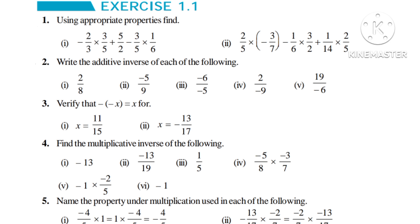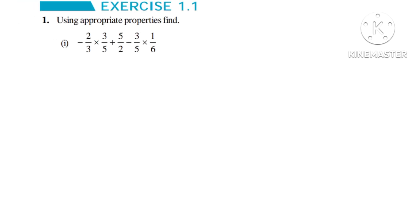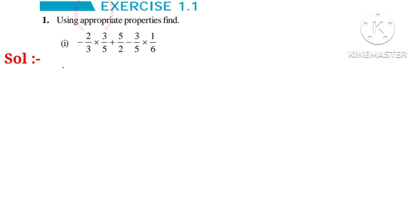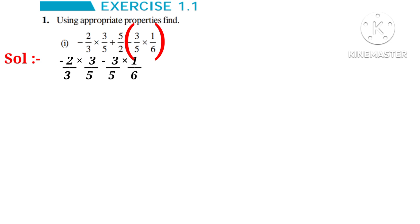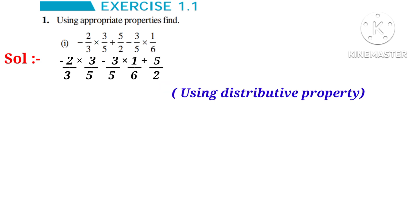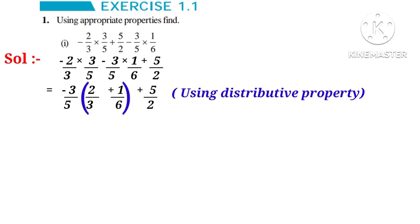Let us take the first problem: using appropriate properties, find the sum. Solution: observe that minus 3 by 5 is a common factor here. So let us write the first term in the first place, the last term in the second place, and the middle term in the last place. Now, using the distributive property, let us take minus 3 by 5 as a common factor. In brackets: 2 by 3 plus 1 by 6 plus 5 by 2.